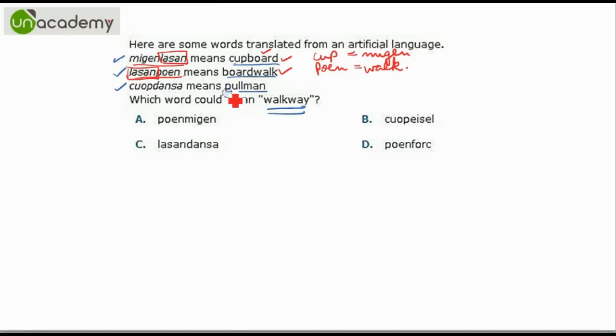Also we have P-O-E-N translated as this one. So we have to find out which word will mean walkway. So we have walk as P-O-E-N and we have two options with P-O-E-N and way. We do not have any translation for way but we know that M-I-G-E-N is cup. So this should be way.